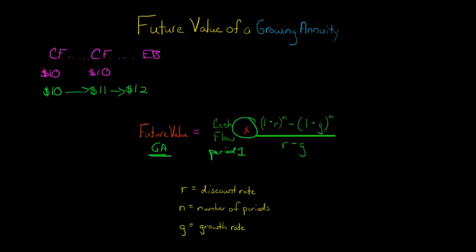We multiply that by this big thing here. We've got 1 plus the discount rate, which is the rate of return, to the nth power, which is the number of periods, and we subtract from all that 1 plus the growth rate. And again, the growth rate,